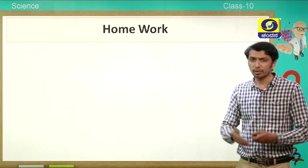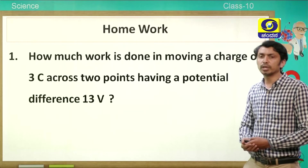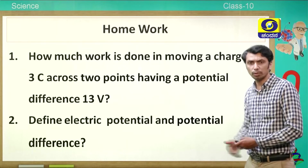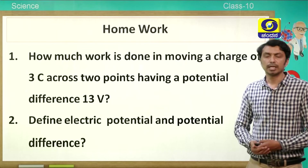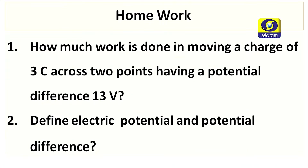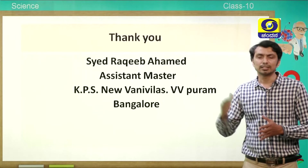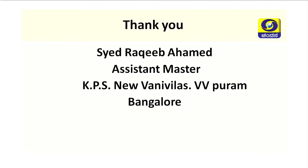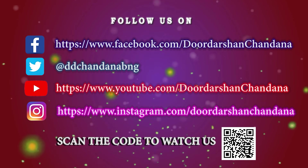Today whatever you have learnt, try to solve these problems. First: how much work is done in moving a charge of 3 coulomb across two points having a potential difference of 13 volt? Second: define electric potential and potential difference. Solve as many questions from the exercise as you can. Today we have seen some of the basic concepts in electricity — the first subunit. The next four subunits will be covered in subsequent classes. Thank you all.